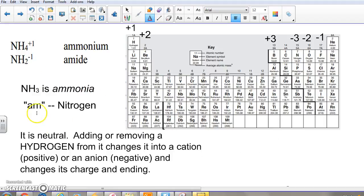First thing to know is that the prefix 'am' generally relates to nitrogen. You might have heard of an amino acid. An amino acid has nitrogen in it. And notice that ammonium and amide both have nitrogen in them and have the 'am' prefix, as does ammonia.